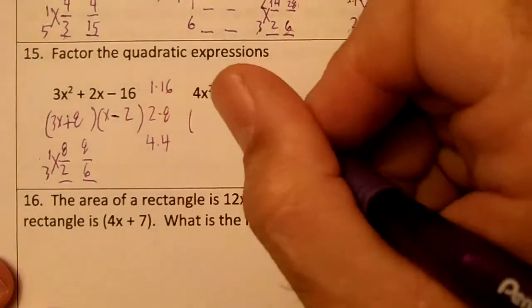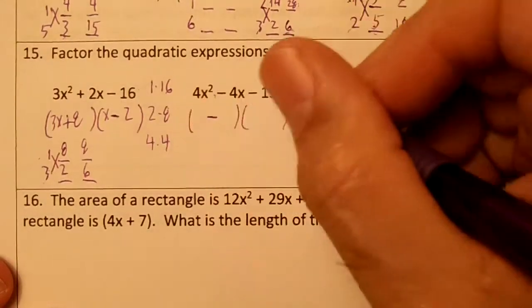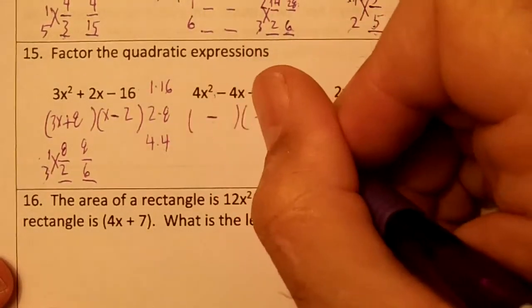Okay, on the next one, draw two parentheses. Drop your minus sign. This means different. So they're going to be a minus and a plus.